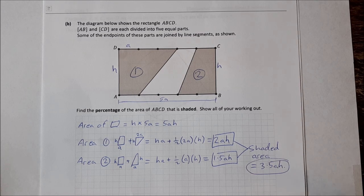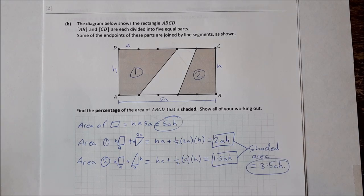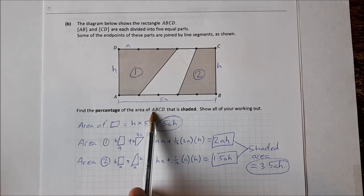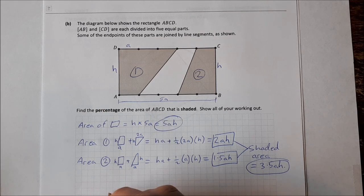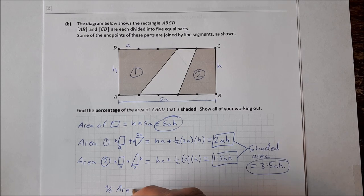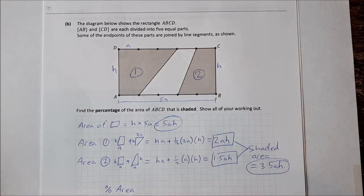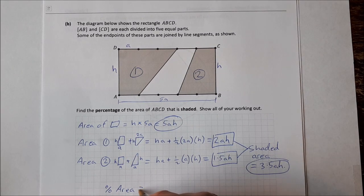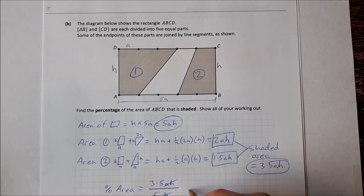Now I have this 3.5AH and I have this 5AH. So the full rectangle is 5AH. The shaded area is 3.5AH. So I want the percentage area that's shaded. So the percentage area, you put the one that you want. So you want the shaded area as a percentage of the whole thing. So the shaded area goes on top, that's 3.5AH over the whole rectangle which is 5AH. AH cancels, 3.5 over 5 which is 70%.